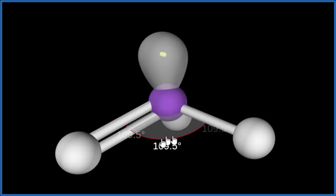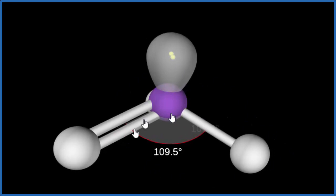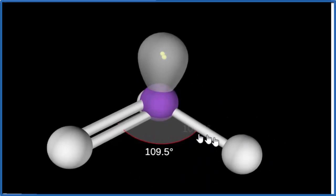The bond angle here is listed as 109.5. It might be a little different. I would expect it to be a little bit less. This is a generic model just to show us the shape. So in general, trigonal pyramidal, 109.5 degrees.